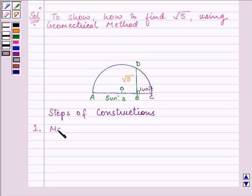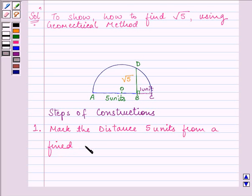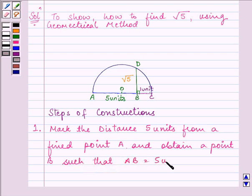First of all, mark the distance of 5 units since we need to represent root 5. We'll mark a distance of 5 units from a fixed point A, where AC is representing a number line. 5 units means you can take any unit and obtain a point B such that AB is equal to 5 units.